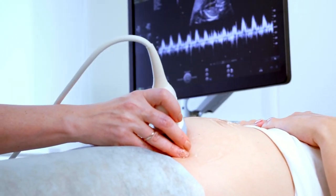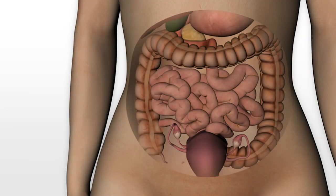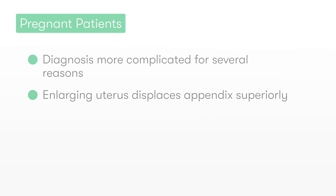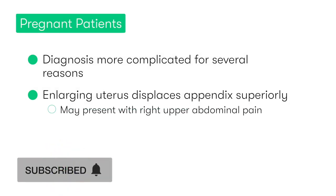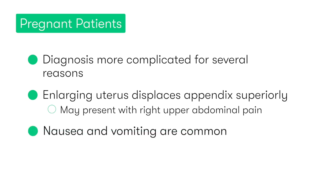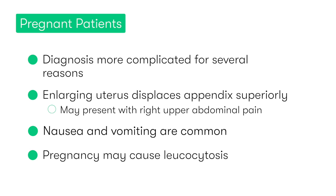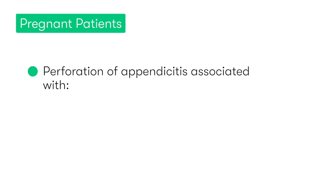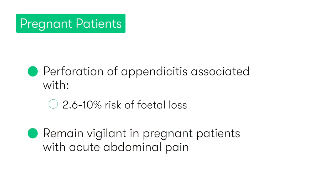Pregnant patients are one group in whom making the diagnosis of appendicitis can be more challenging. As the uterus enlarges, it displaces the cecum and the appendix superiorly — therefore, if appendicitis occurs, the patient may actually complain of pain in the right upper quadrant rather than the right iliac fossa, leading to confusion with gallstone disease. Additionally, it's not uncommon for pregnant women to experience nausea and vomiting and have a leukocytosis as part of normal pregnancy. Perforation and subsequent peritonitis carries a risk of fetal loss of between 2.6 to 10%, so it's vital we always have appendicitis in mind in any pregnant patient with acute abdominal pain.